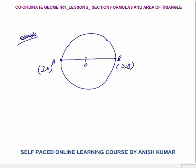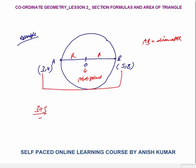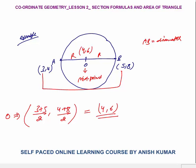For example, if we need to find the coordinates of the center of a circle and we know the coordinates of the diameter endpoints A and B — because the center O is the midpoint of the diameter — we can apply the midpoint formula. So the coordinates of O are X₁ plus X₂ by 2, that is 3 plus 5 by 2, and Y₁ plus Y₂ by 2, that is 4 plus 8 by 2, giving us the center O at (4, 6).